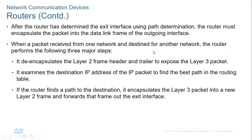When a packet is received from one network and destined for another, the router performs three steps. First, it decapsulates — it opens up the frame header — because it wants to check the IP address. It examines the destination IP address to find the best path in the routing table. If a path is found, it encapsulates the layer three packet into a new layer two frame.